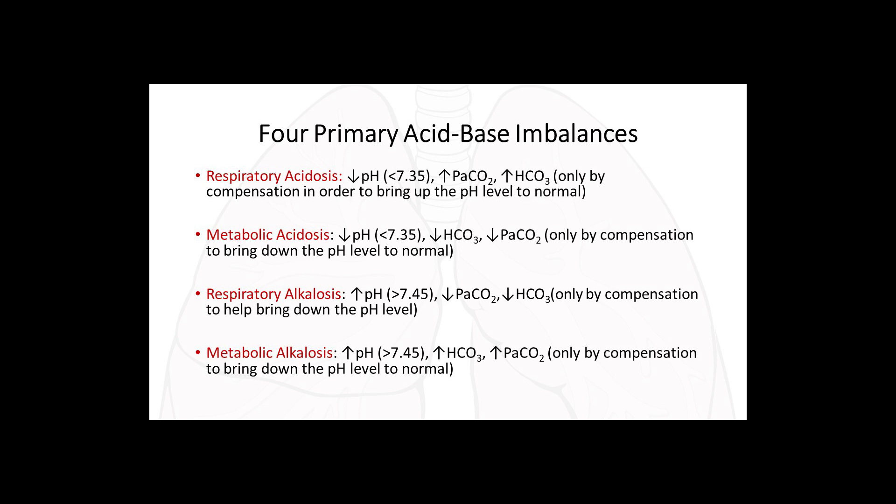The more base (bicarb) you lose, the more acid (CO2) must be removed to level the pH. Respiratory alkalosis: pH greater than 7.45, decreased PaCO2, and bicarb will also decrease by compensation to lower pH. Metabolic alkalosis: pH greater than 7.45, elevated bicarb primarily, with PaCO2 increasing only by compensation to return pH to normal. Early in these situations, compensation has often not yet taken effect — so you must distinguish acute versus chronic, or early versus late, when analyzing acid-base imbalances on the CCRN exam.